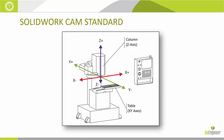To briefly explain machining axes: on a three-axis machine, we're typically talking about movement in Z (the purple arrow), X (positive or minus, represented by the red arrow), and Y (positive or minus, represented by the green arrow). These are the three axes we commonly refer to when we talk about three-axis machining or two and a half axis.